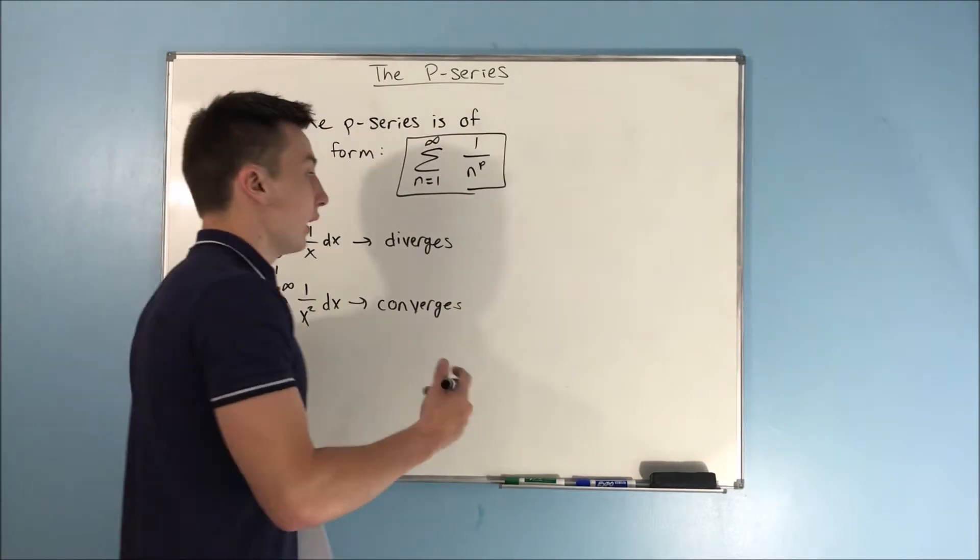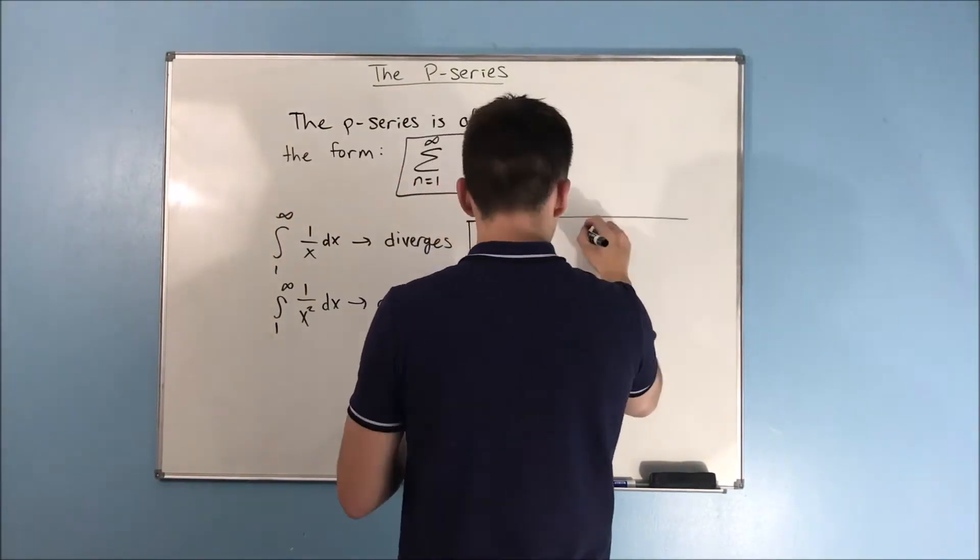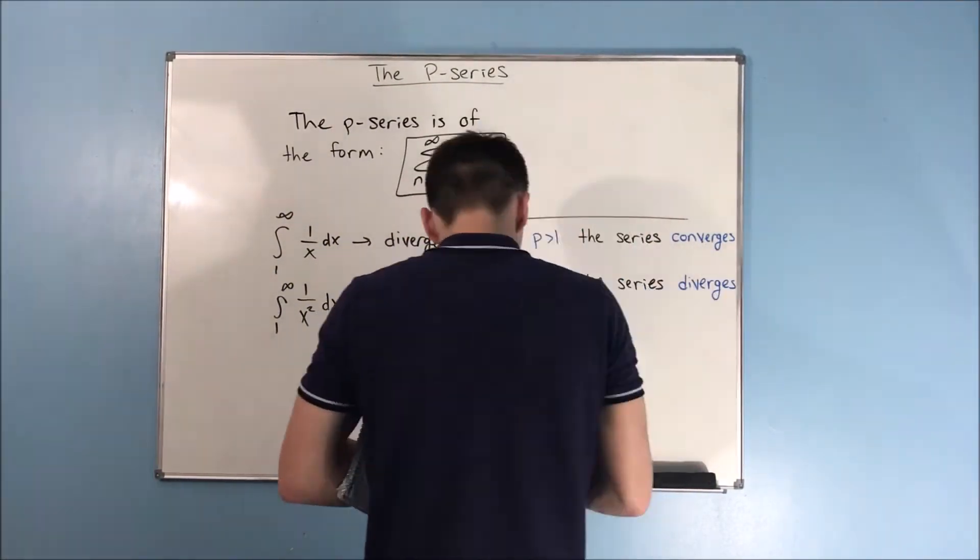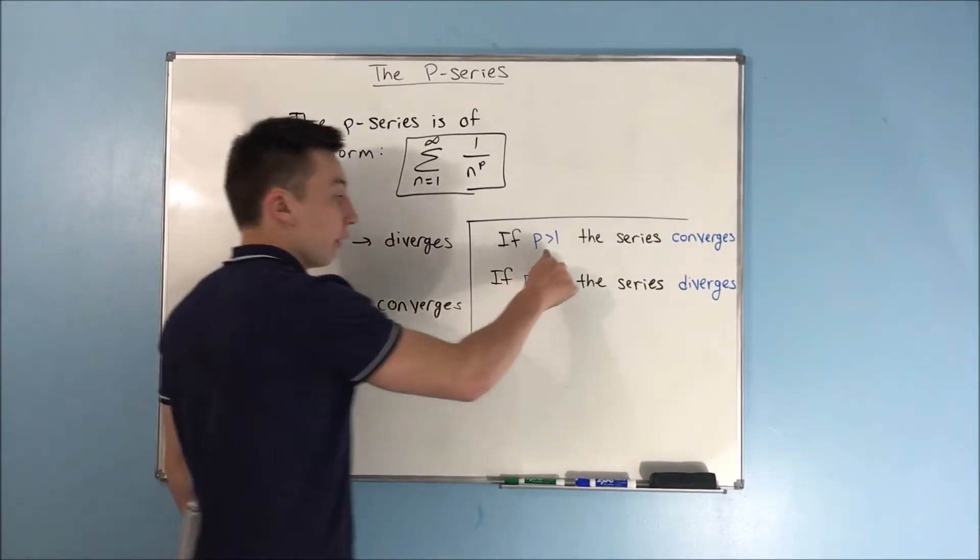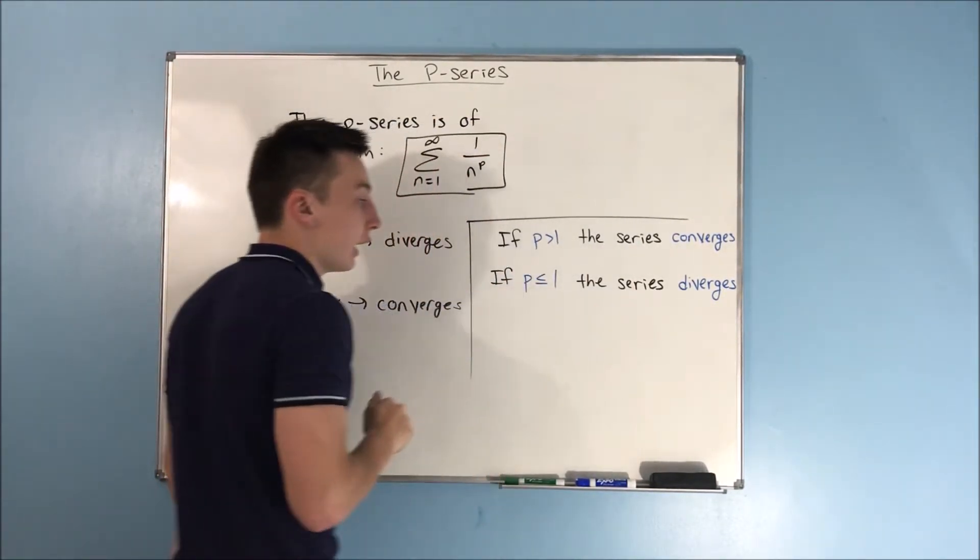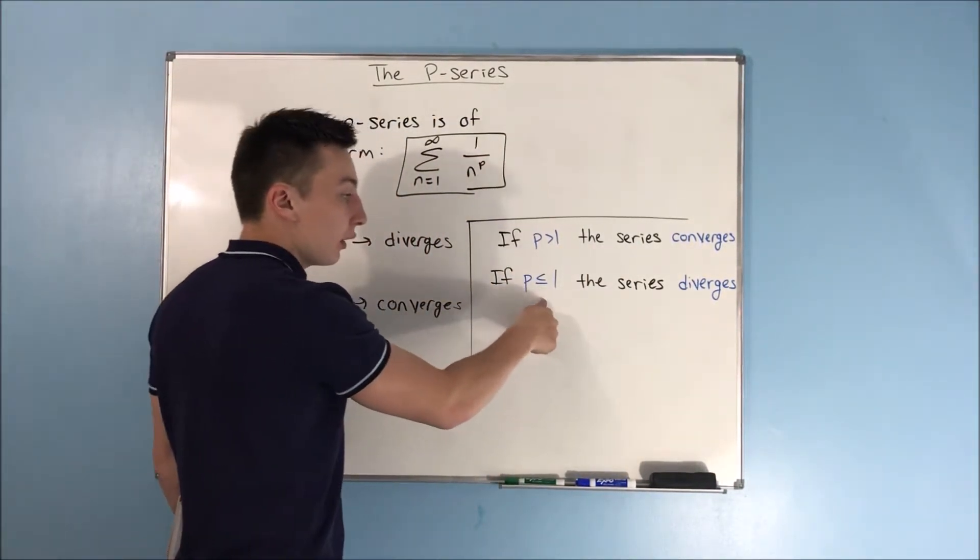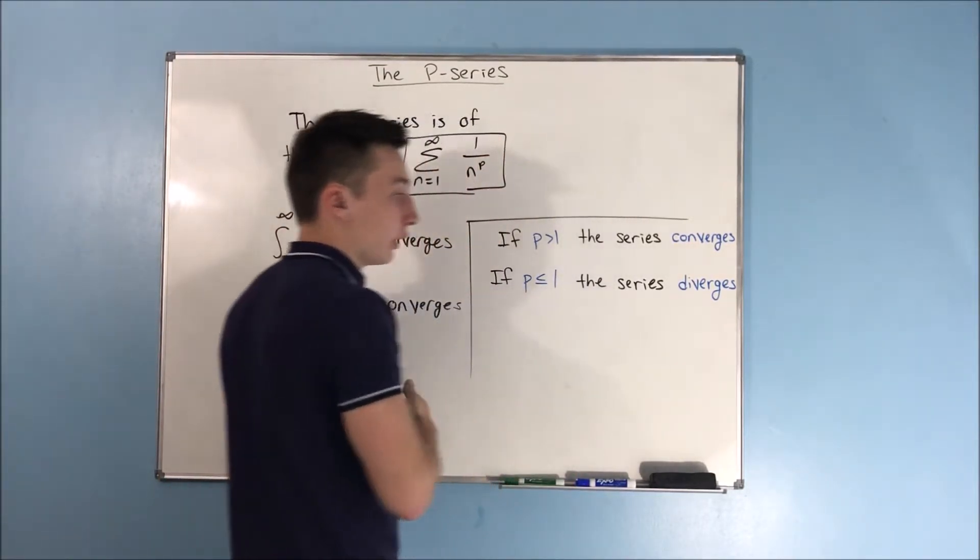And the rule for this is... So, if p is greater than 1, the series converges, and if p is less than or equal to 1, the series is going to diverge.